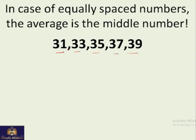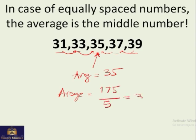Or we can see they are equally spaced. For example, if you look at this, the difference is 2. If they are equally spaced, then the middle number is the average. So here the average is 35. You don't need to add them and divide. If we use the previous method, adding them all up gives you 175, and if you divide by 5, you still get 35.